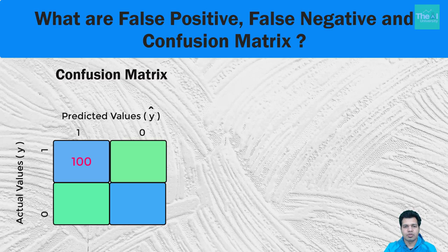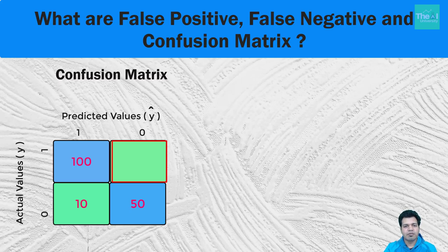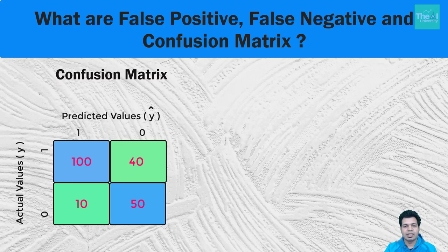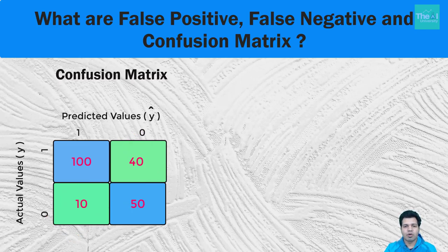Let's say we have 100 true positive observations. The quadrant with both predicted and actual values as 0 is the true negative case — let's say 50 observations. The false positive or type 1 error quadrant has 10 observations, and the false negative or type 2 error quadrant has 40 observations. The diagonal values in light blue are the ones predicted correctly, while the other diagonal in light green are errors. We need fewer observations in that error diagonal for better model performance.